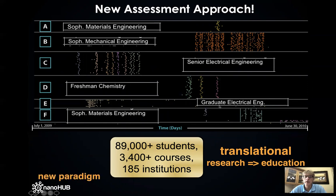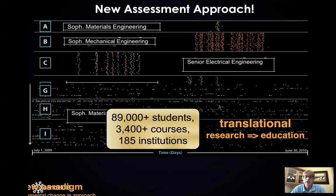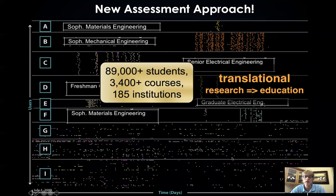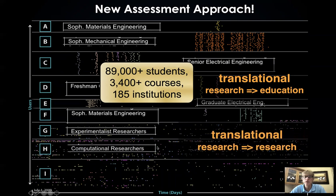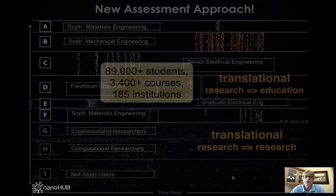We can compare these users to unclassified users that behave very erratically with no coordinated behavior, but we can identify them as experimental researchers or computational researchers — that is translational research to research. Then we have another group of about 50% of our users that we haven't classified yet, which we call self-study users, and that's what we'll continue to work on to engage them more.